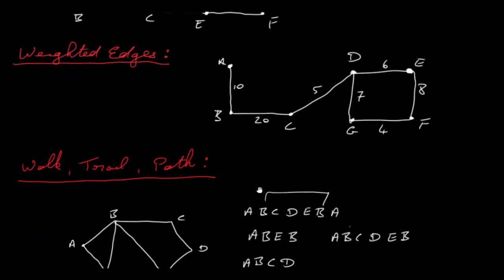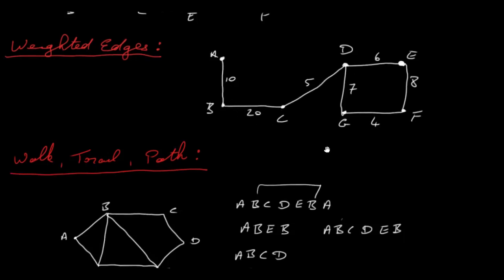Next we have weighted edges. In this graph there are numbers on each of the edges, so this is called a weighted graph. These numbers could represent flow rates in pipes, or distances between towns A and B, B and C, and so on — for example, in kilometres. So this is called a weighted graph, or these are called weighted edges.